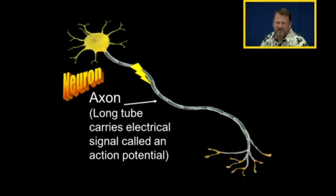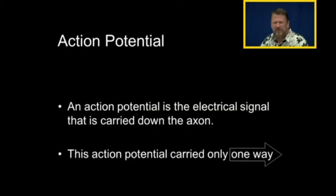Neurons have axons. Axons are long tubes that carry electrical signals. And those electrical signals are called action potentials. The action potential is the electrical signal that's carried down the neuron. Something important to remember is that action potentials are only carried one direction, from the hillock to the synaptic terminal.